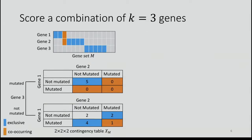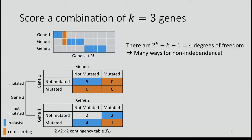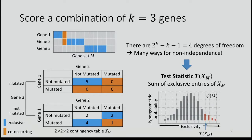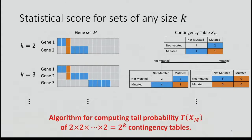What hasn't been addressed before is how to score a combination of more than two genes conditioning on mutation frequency. For a triple — three genes — you could create a 2×2×2 contingency table, adding a dimension based on whether gene three is mutated or not. In this case there are four degrees of freedom, meaning many ways of non-independence. So we use a test statistic T, which is the sum of the exclusive entries of the contingency table. COMET has an algorithm for computing the tail probability of T for arbitrarily sized gene sets — 2^K contingency tables — to compute our mutual exclusivity score.